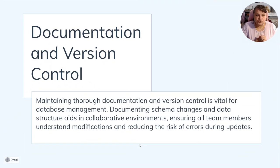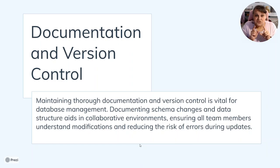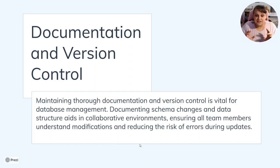Documentation and version control: maintaining thorough documentation and version control is vital for database management. Version control is one of the reasons to normalize the table — it makes upgrades possible. Documenting schema changes and data structure aids in collaborative environments, ensures all team members understand modifications, and reduces the risk of errors during updates.